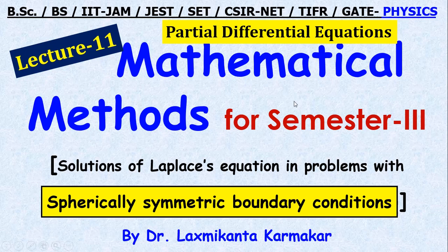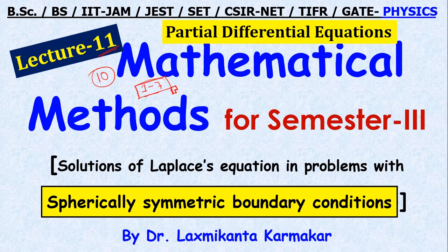Hello, welcome everyone. This is lecture number 11. In lectures 1 to 7, we discussed the solution of second-order differential equations by the Frobenius method, and we mainly covered the Legendre polynomial, Bessel function, and Hermite differential equation, whose solutions are obtained by the Frobenius method, along with generating functions and recurrence relations.